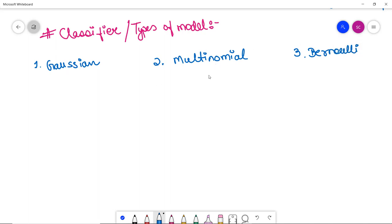These are the three types of classifiers. We are going to implement Gaussian and Multinomial in our upcoming video. Before ending this video, I would like to give you certain applications of Naive Bayes classifier.